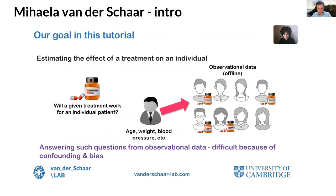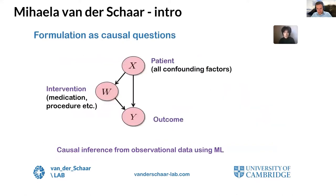The goal of this tutorial is mainly on estimating the effect of a treatment on an individual from offline observational data, which can be gathered in electronic health records, disease registries, etc. This is difficult because of the confounding and bias present in observational data, so we need to formalize this as a causal inference problem. The question of estimating individualized treatment effects for a patient is a causal inference problem. We have patient characteristics, interventions, and outcomes associated with the various interventions.